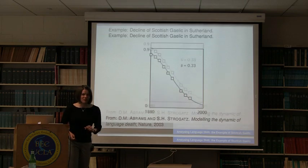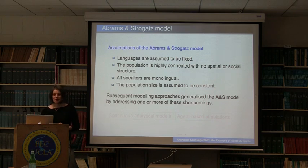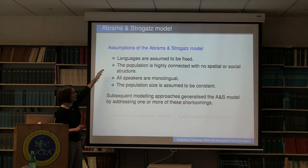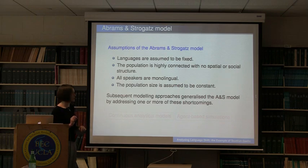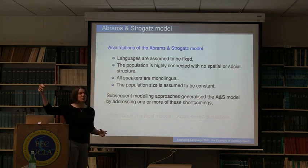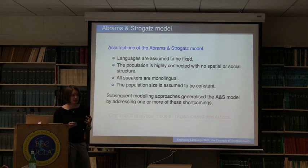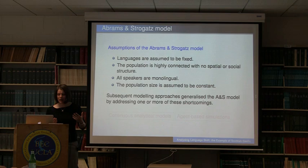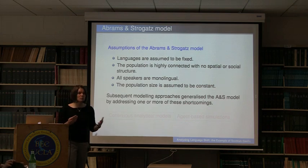However, the model was subsequently criticized heavily, especially by bilingualists, because it assumed several very unrealistic things. First, languages are assumed to be fixed — they don't evolve. Second, populations are highly connected with no spatial or social structure. All speakers are monolingual, so there is no notion of bilingualism in the model. And the population size is assumed to be constant, with no population growth or population decline. Starting from that first paper, quite a number of subsequent modeling approaches tried to generalize the Abrams and Strogatz model by addressing one or more of these shortcomings.